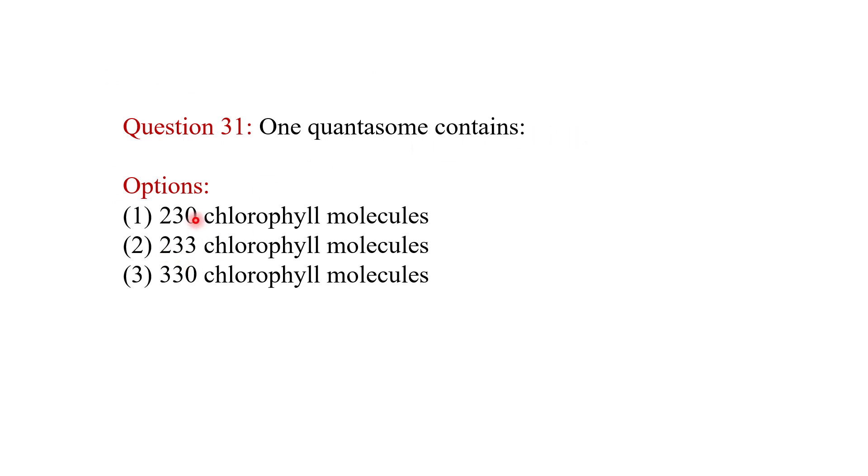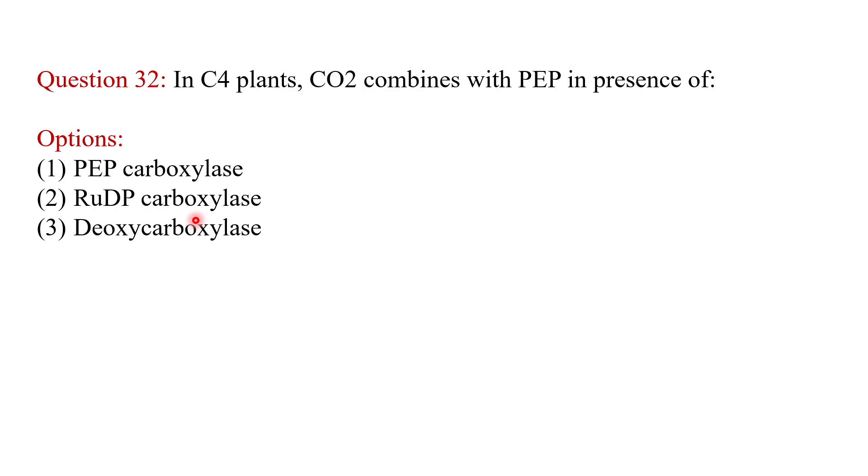One quantasome contains 230 chlorophyll molecules. In C4 plants, CO2 combines with PEP in the presence of PEP carboxylase. So these are a few important MCQs on photosynthesis. Please comment below if you like this video and do subscribe for more such important MCQs in botany. Thank you for watching.